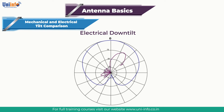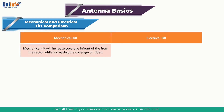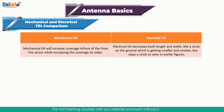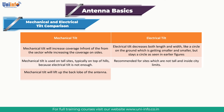Variable electrical down tilt antennas are very costly. Mechanical tilt increases coverage in front of the sector while also increasing coverage on the sides, whereas electrical tilt decreases both the length and width of the coverage area like a shrinking circle, as seen in the figures on screen. Mechanical tilt is used on tall sites, typically on top of hills, where electrical tilt is insufficient. Electrical tilt is recommended for sites that are not tall and located within city limits. Mechanical tilt decreases coverage and adds interference as down-tilting the main lobe results in up-tilting of the back lobe.